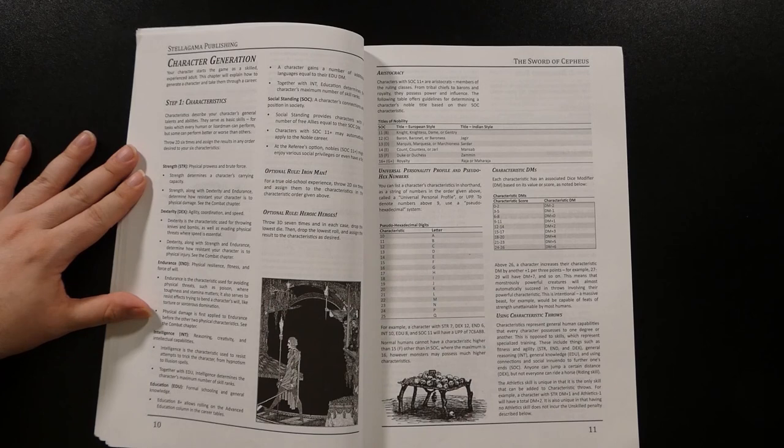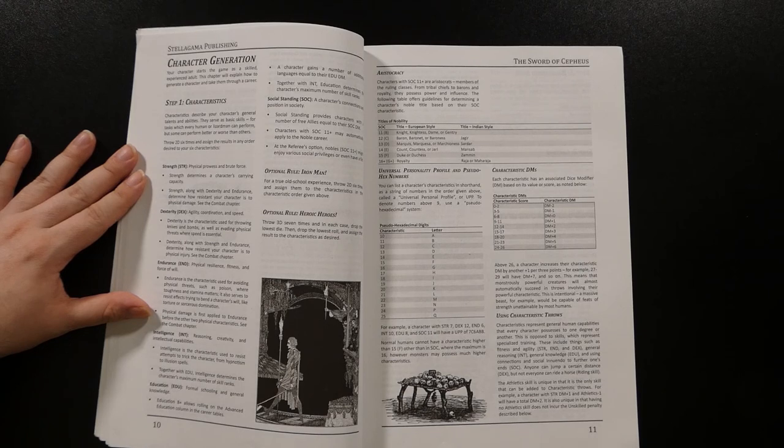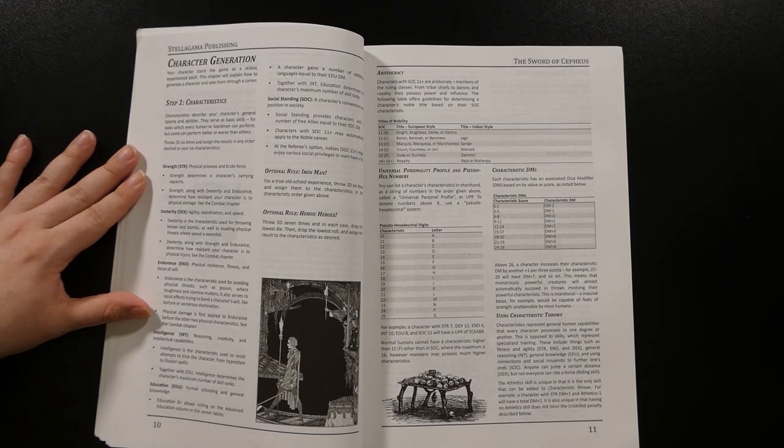The next section is character generation. In Sword of Cepheus, you have six basic characteristics—strength, dexterity, endurance, intelligence, education, and social standing, as is common with a system that it's based on. Each of these is determined by a roll of two dice, assigned as you wish, with optional rules to mimic the stat generation methods of certain OSR games, including a 3d6 drop the lowest and then a 2d6 in order option to cover both the high and the low end of those systems, and I can really get behind that.